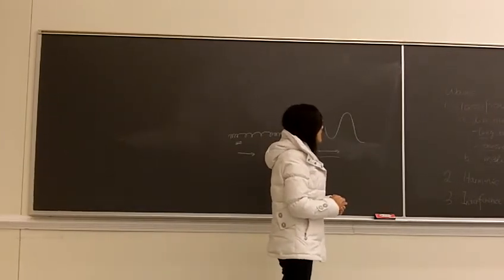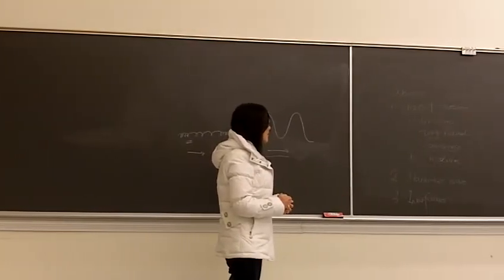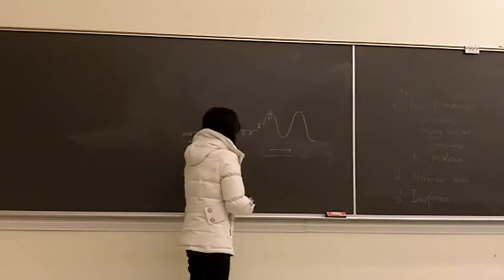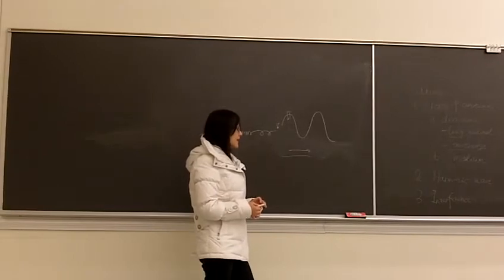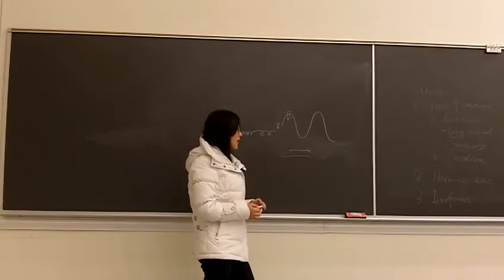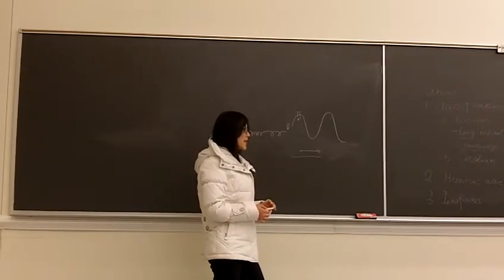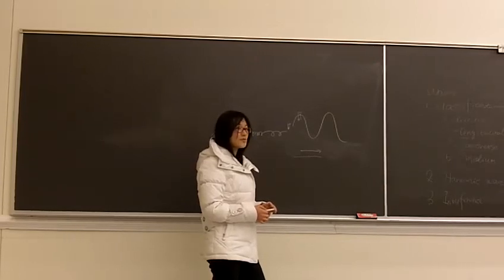The next method to classify a wave is based on whether the wave needs medium to travel. And these are called mechanical waves. And there's only one kind of wave that doesn't need medium to travel, which means they can travel through a vacuum. They are electromagnetic waves.